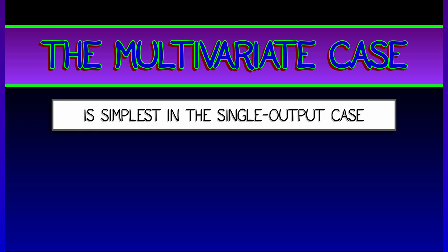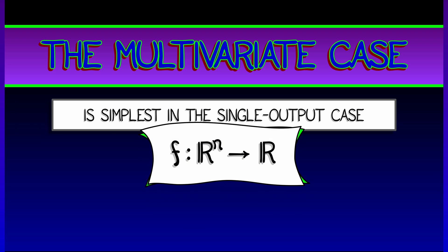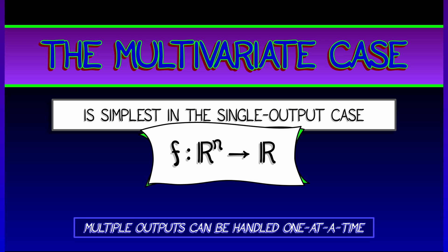All right, let's work towards the multivariate case for Taylor series. This is going to be simplest if we just have a single output. So F is going to have N inputs, one output.